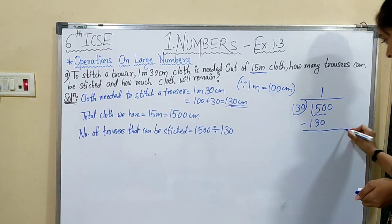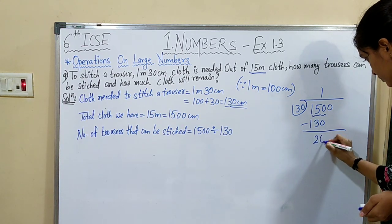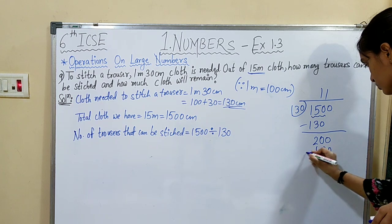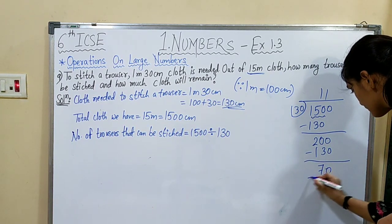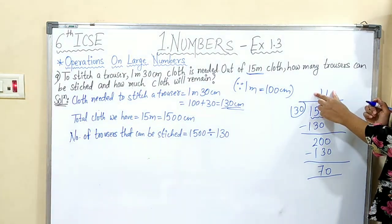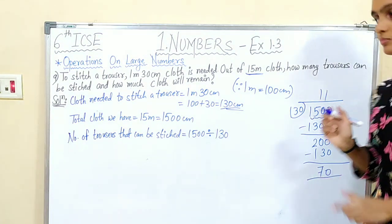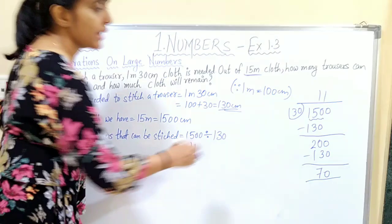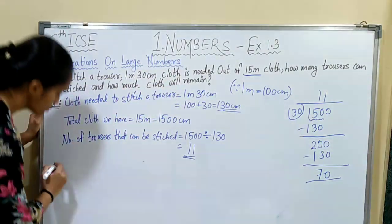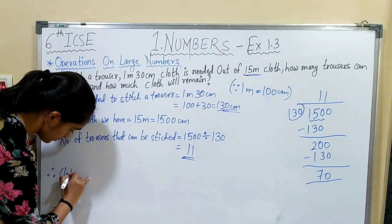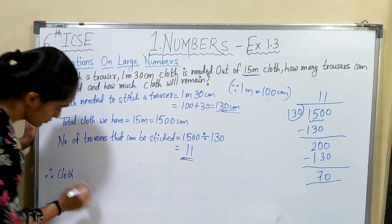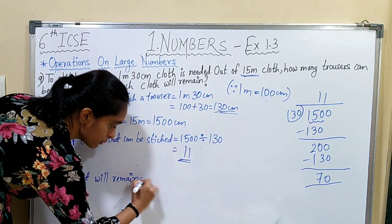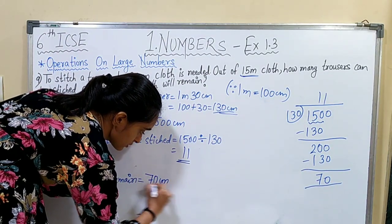Dividing 1,500 by 130: 130 goes 11 times with a remainder of 70. So total 11 trousers can be stitched and 70 centimeters of cloth will remain. Therefore, number of trousers = 11 (quotient) and cloth remaining = 70 centimeters.